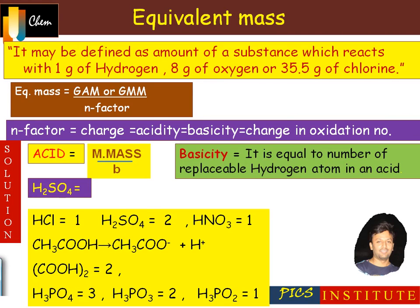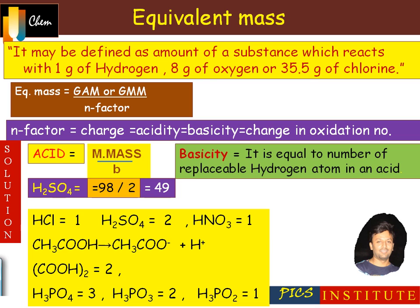So if we need to determine the equivalent mass of H2SO4, according to the formula — molecular mass divided by basicity — its molecular mass is 98 and basicity is 2, hence the equivalent mass is 49. In this manner, we can find out the equivalent mass of an acid.